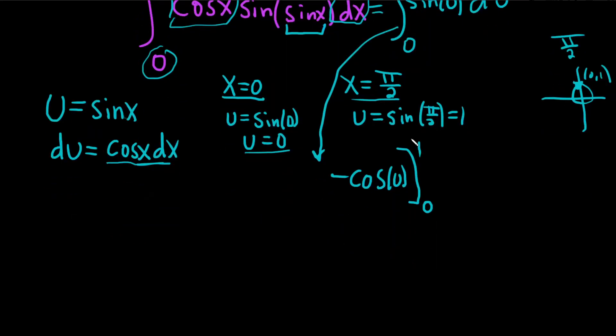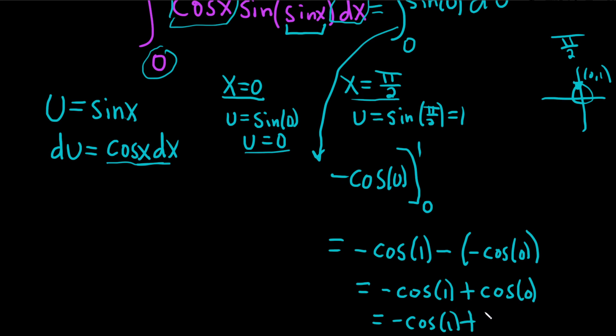Then the rule is we plug in the top number first. So this is negative cosine of 1 minus negative cosine of 0. So this is negative cosine of 1 plus cosine of 0. Well, cosine of 0 is 1, so this is negative cosine of 1 plus 1.